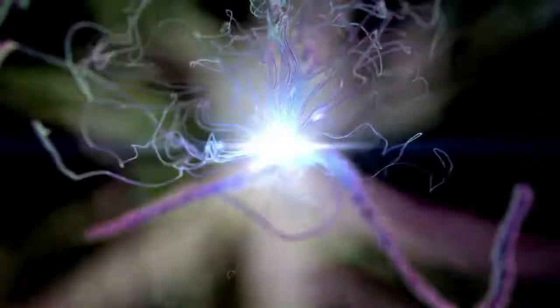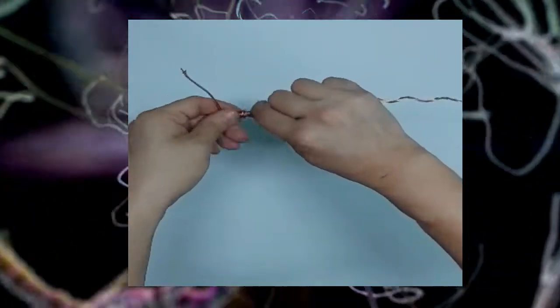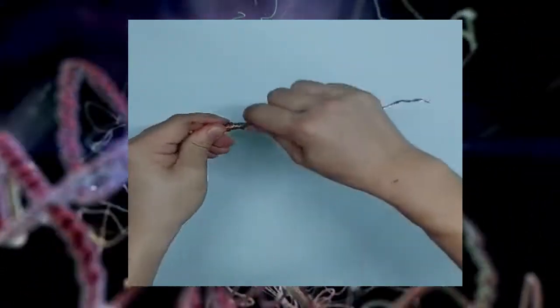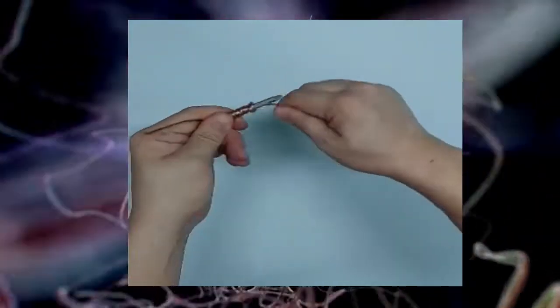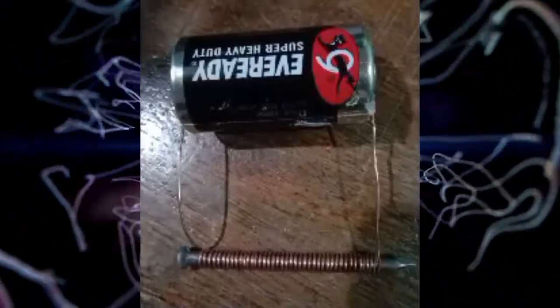An electromagnet can produce stronger magnetic fields by using more coils of wire. Each loop of wire adds more force to the electromagnet.